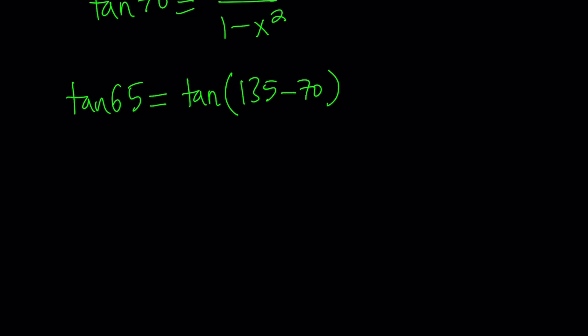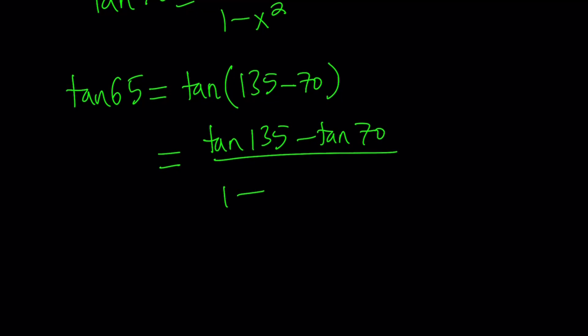Now, we can use the formula, the difference formula, tangent 135 minus tangent 70. Again, all the angles are in degrees. Don't get me wrong. They're not in radians. And this is what I get.